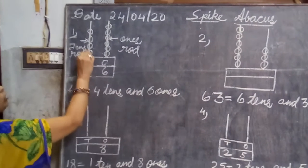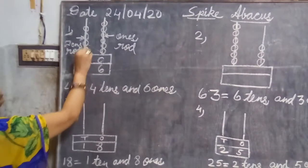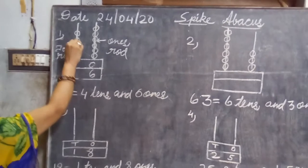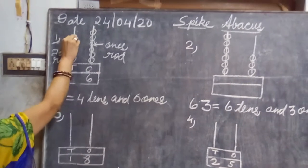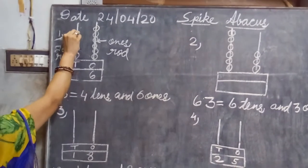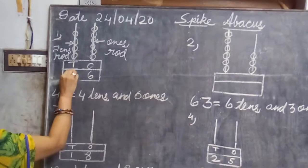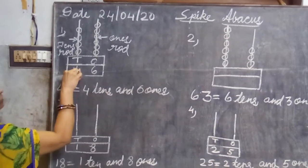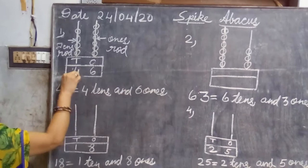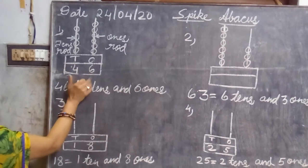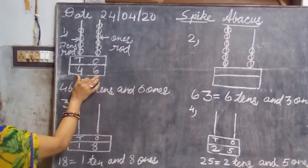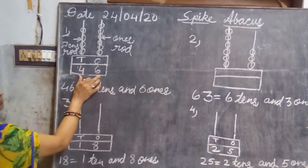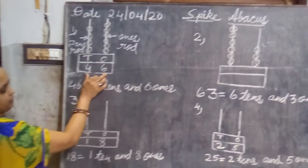And here let us count how many spikes are there in tens. So one, two, three and four. So at the tens place we are going to write four.